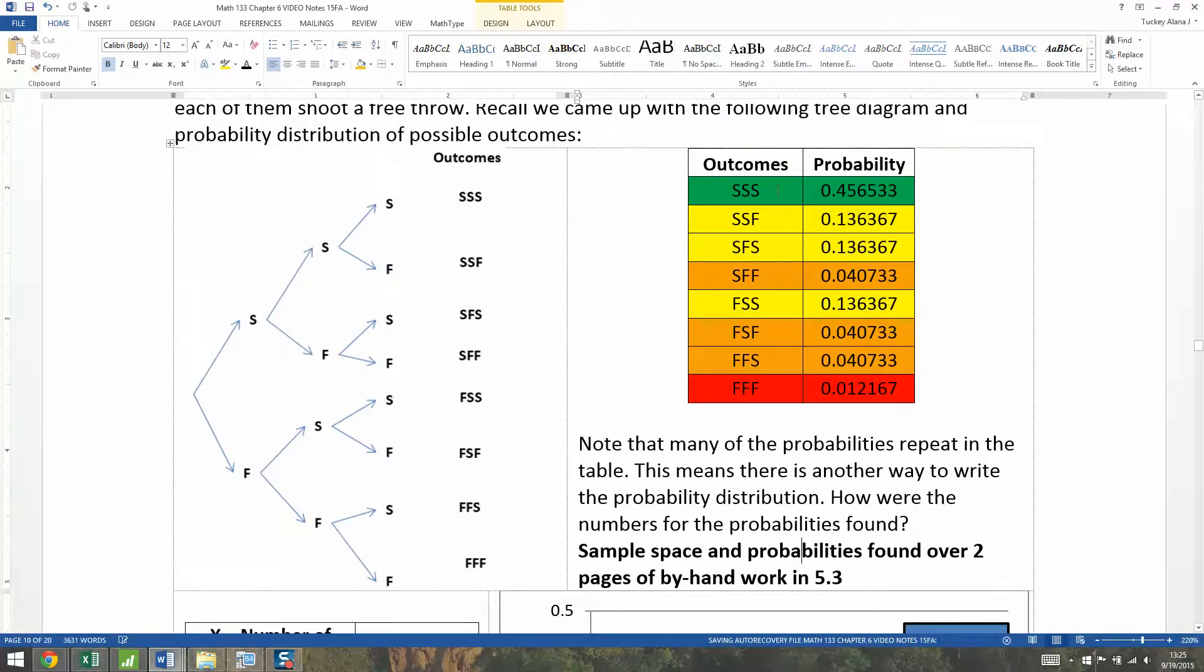Notice that many of these probabilities repeat, and I marked these with color to help. SSS is success, success, success, so we give it green. I'm working off the stoplight method here. Green means go, so yay team. Then yellow is cautious - two successes, one failure. There's three ways that can happen.